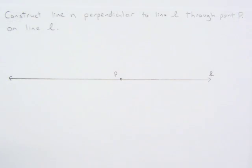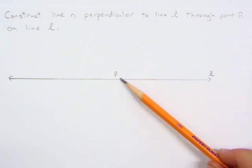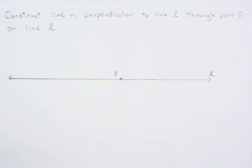In this video I'm going to show you how to construct a line perpendicular to another line through a point that is on the line. So here you can see line L and a point P that is on the line.